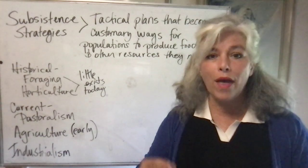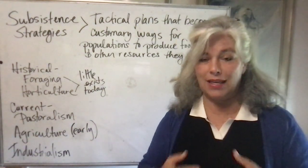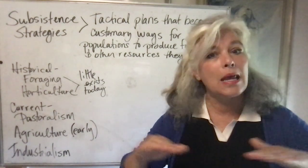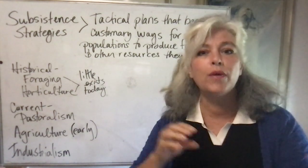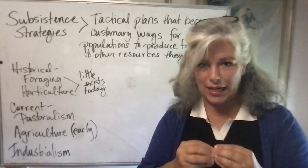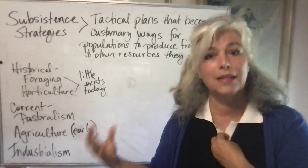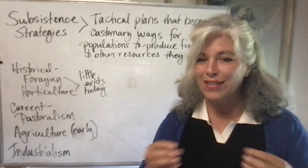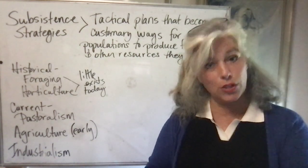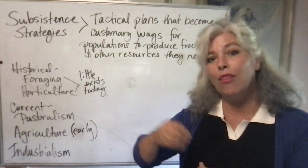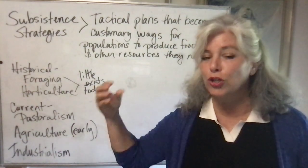Foraging is the original natural subsistence strategy that allowed human beings to survive. It doesn't manipulate the environment at all. Looking at the five themes of geography, there is a ton of human-environmental interaction, but in foraging, humans only harvest from the natural environment enough to get by. They also don't harvest all of it — they know other animals and creatures in the natural environment might need some of the same resources for their own food supply.